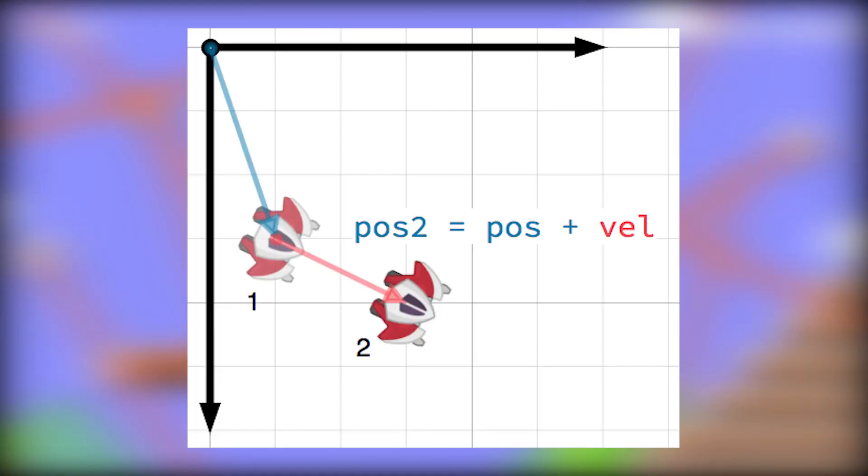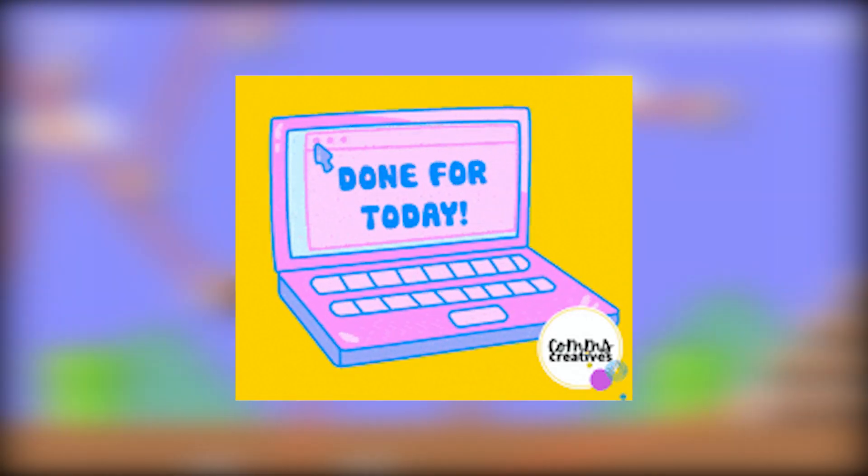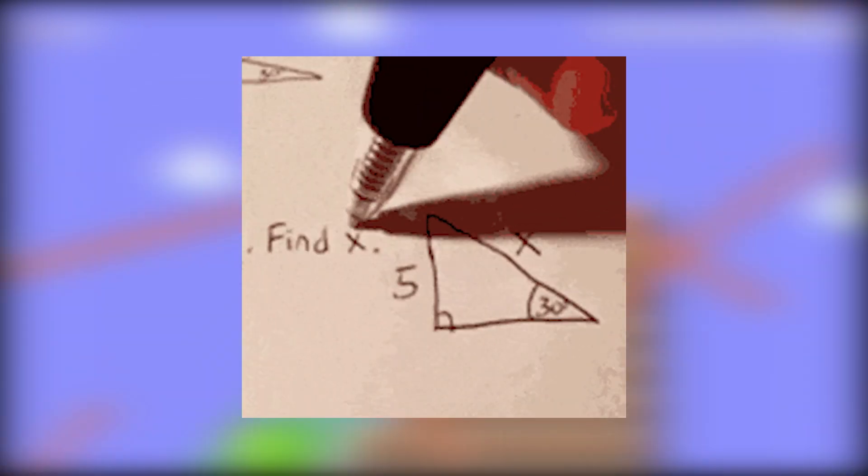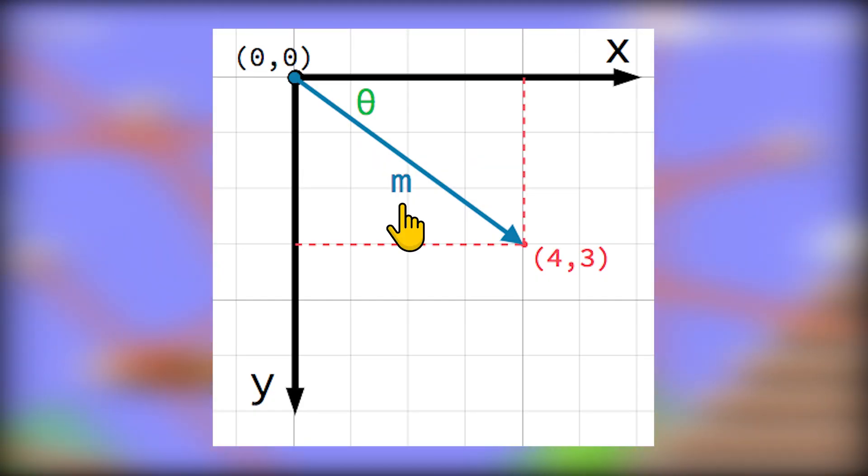Almost all video game movement is vectors, and before you click off because a vector means math, I promise it's not hard to understand. A vector is only a magnitude and a direction.